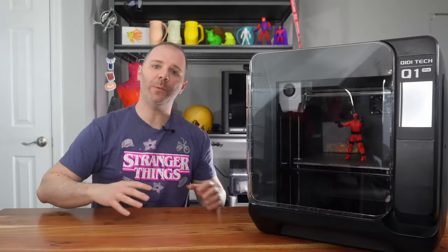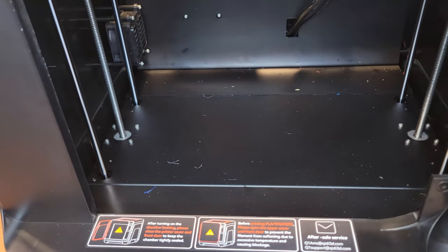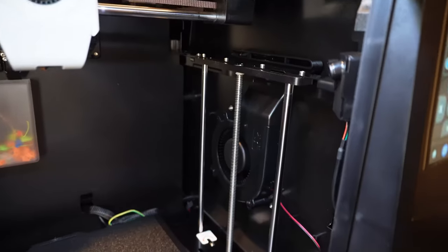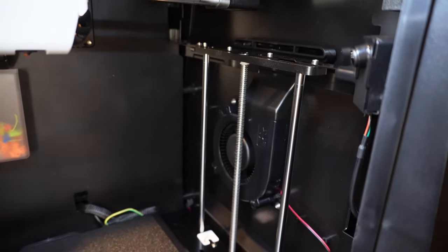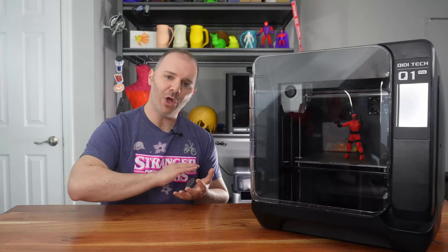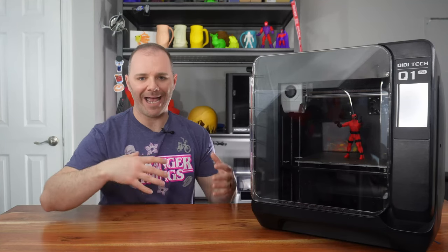Moving inside this 3D printer, we have a steel-reinforced frame. Also inside that enclosure, to the right side, is an auxiliary parts cooling fan. This is a larger fan, very common in these enclosed 3D printers nowadays, and this will help cool parts across the build plate as it is printing.